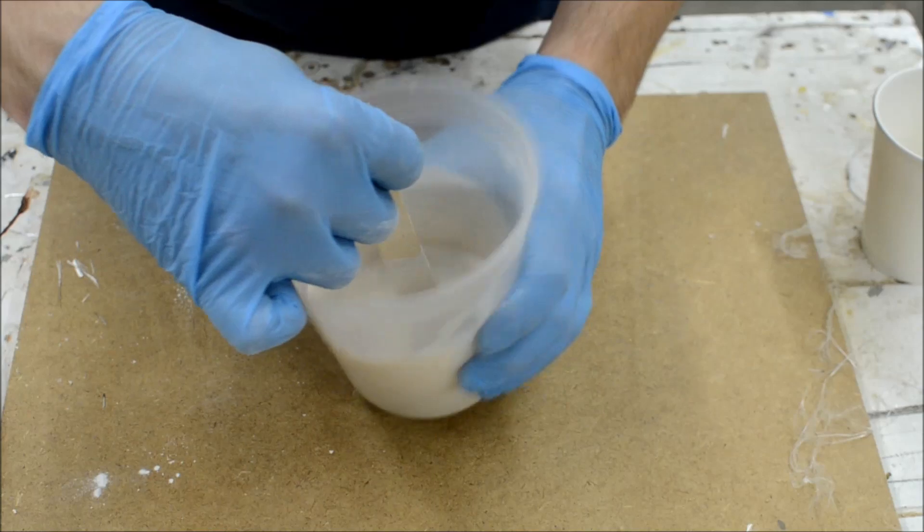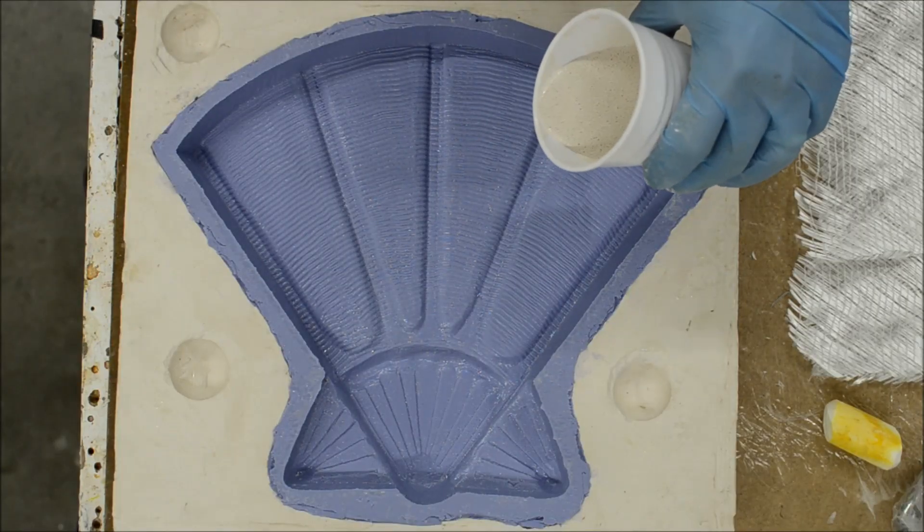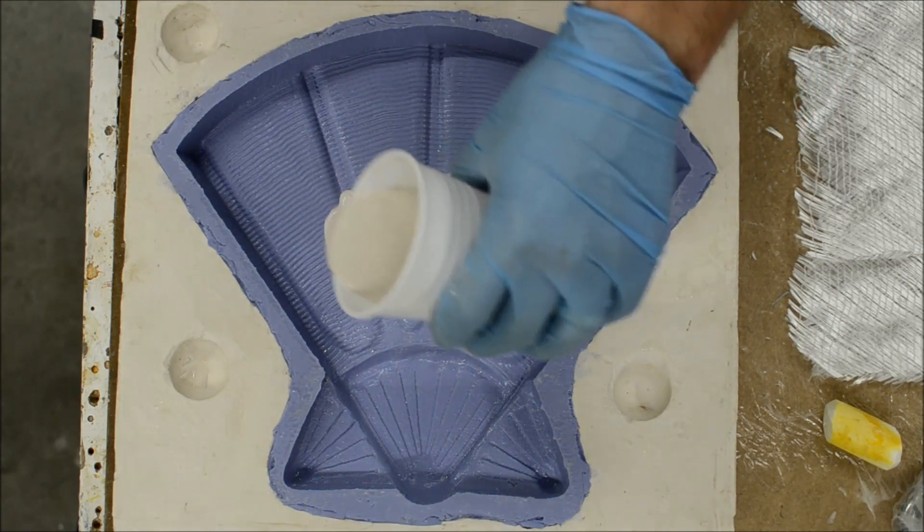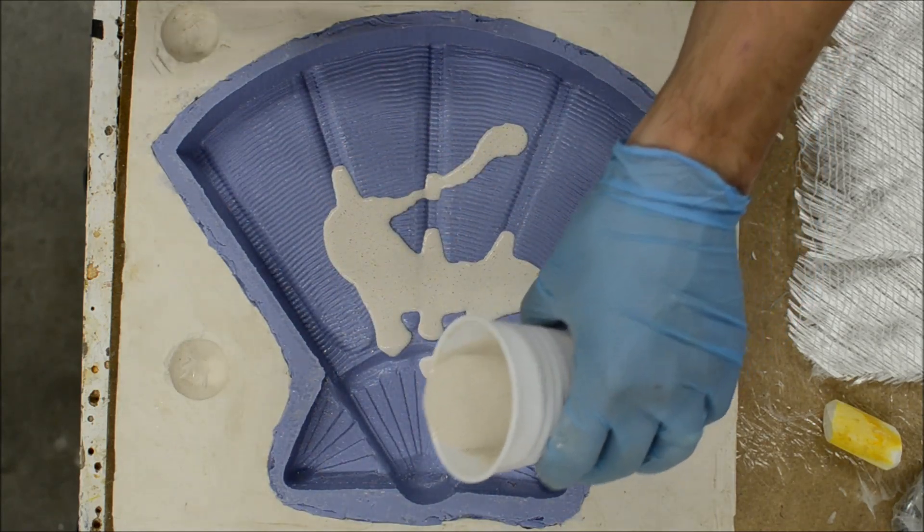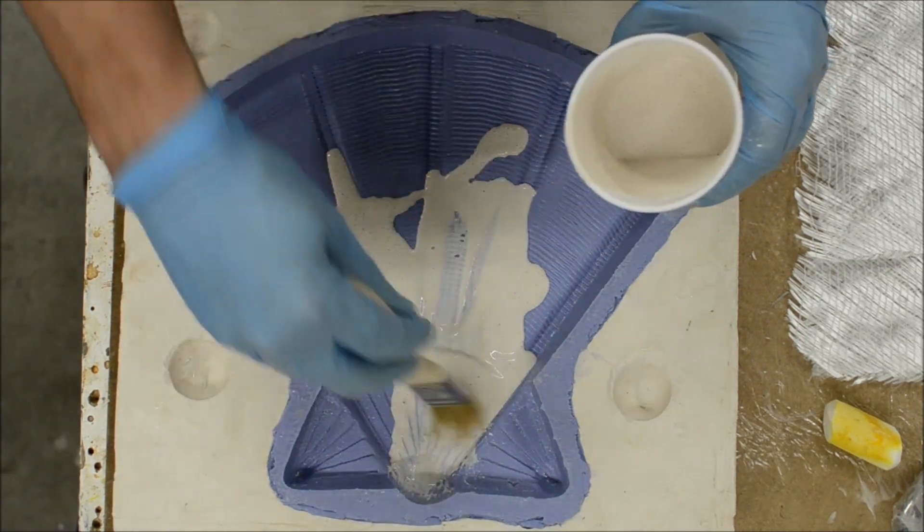To use aqua resin, you combine a liquid and solid component. For fiberglass work, one part liquid to two parts powder is sufficient. Aqua resin can be thickened simply by increasing the proportion of powder to liquid.